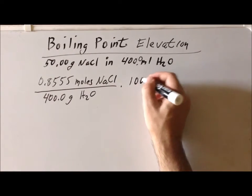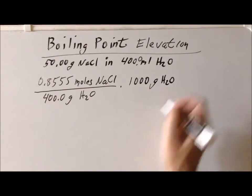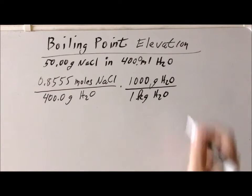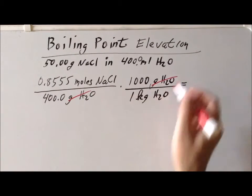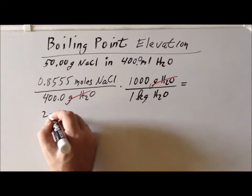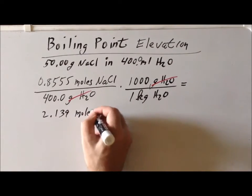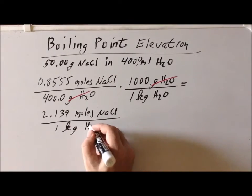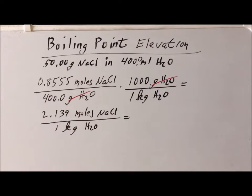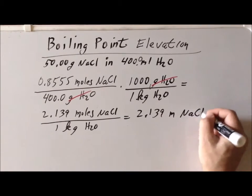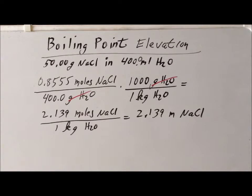Therefore, we can use those data to calculate the molality of the solution. We note that we have 0.8555 moles of sodium chloride dissolved in 400.0 grams of water. A useful method to convert this information to molality makes use of the fact that there are 1,000 grams in 1 kilogram. If we perform this particular multiplication, the units of grams of H2O will cancel and we're left with 2.139 moles of sodium chloride in 1 kilogram of the solvent. But this is exactly the definition of molality. So this is a 2.139 molal solution of sodium chloride.